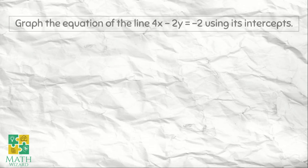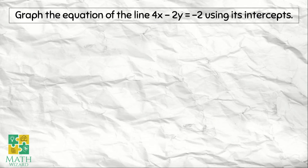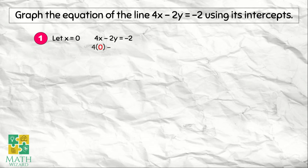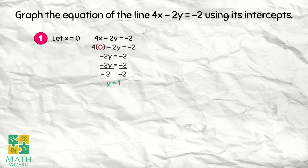Next example: graph the equation of the line 4x minus 2y is equal to negative 2, using its intercepts. First step, we let x equal to 0. So 4x minus 2y is equal to negative 2, and we replace x with 0. It becomes 4 times 0 minus 2y is equal to negative 2. Simplifying, that becomes negative 2y is equal to negative 2. We divide both sides by negative 2, and y equals positive 1, since negative 2 divided by negative 2 is positive 1. So our first point is (0, 1).